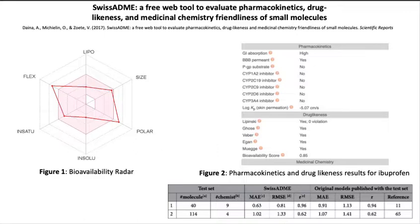SwissADME is designed to be a user-friendly web server that enables the user to input a variety of molecular files for drug likeness screening. For the screening of large libraries, the user can submit as many files as they desire. After file submission and a brief waiting period, the user will receive the scores of each of the molecules they submitted in a large variety of categories. Some important examples of these categories are lipophilicity, water solubility, medicinal chemistry, and drug likeness.